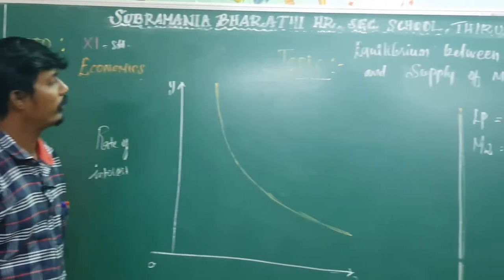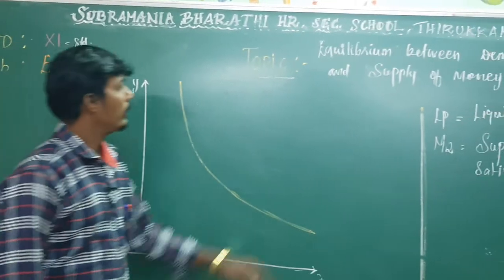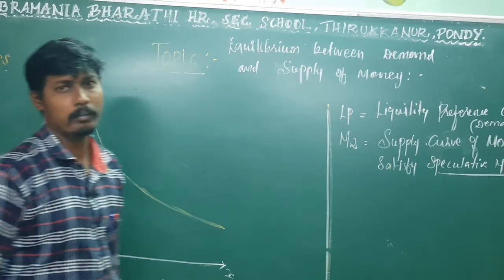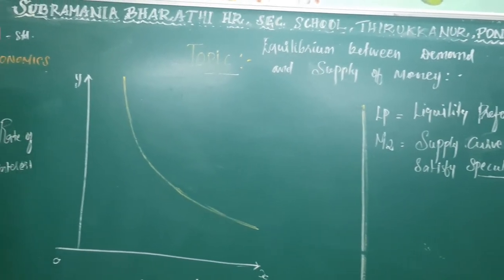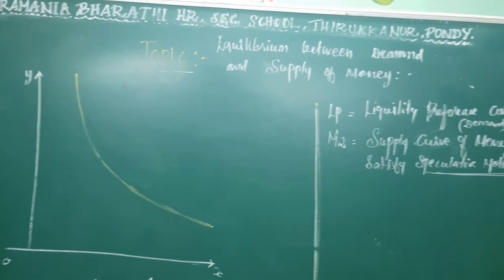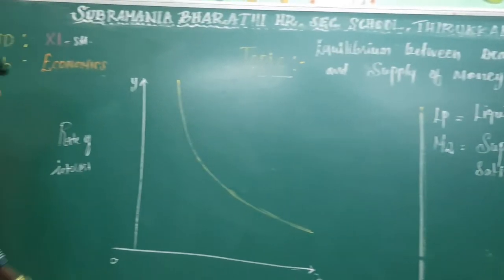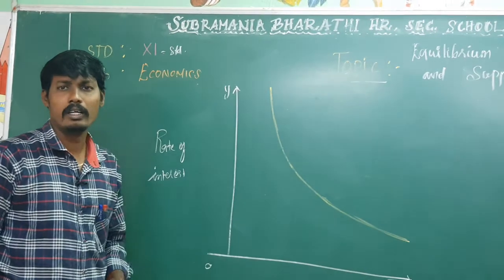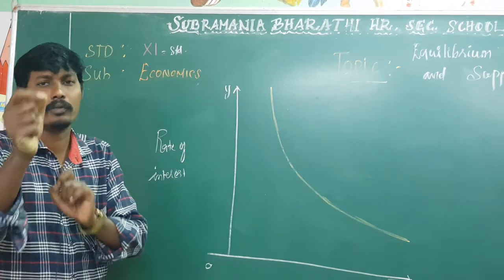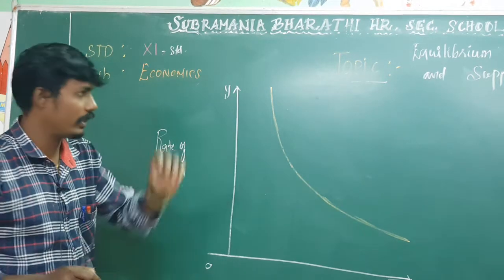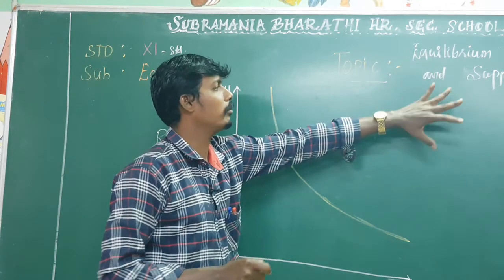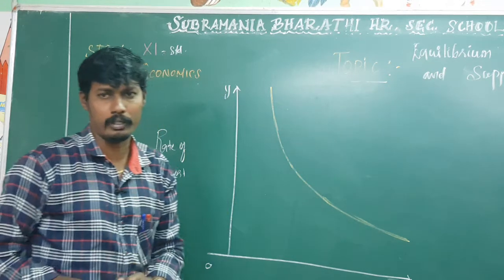We are going to look at the topic of equilibrium between demand and supply of money in 11th standard economics, Chapter 6, Distribution Analysis. The discussion is about the topic for Keynes' Liquidity Preference Theory of Interest, specifically the equilibrium between the demand and supply of money.